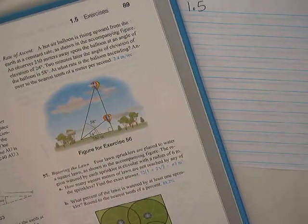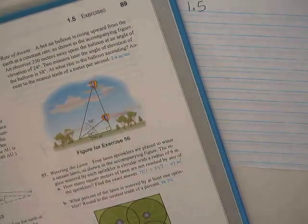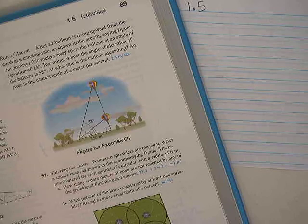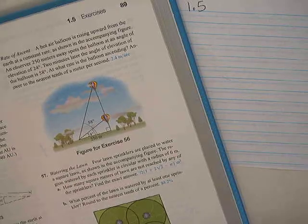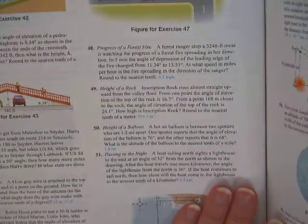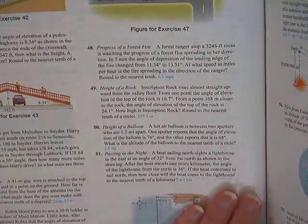Okay, number 50. A hot air balloon is between two spotters who are 1.2 miles apart. One spotter reports that the angle of elevation of the balloon is 76 degrees, and the other reports that it is 68 degrees. What is the altitude of the balloon to the nearest tenth of a mile?